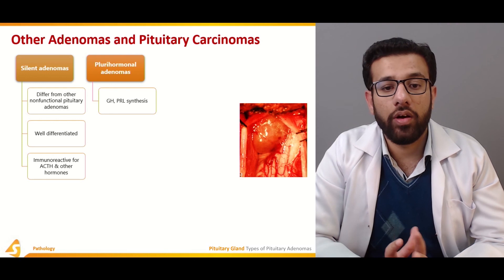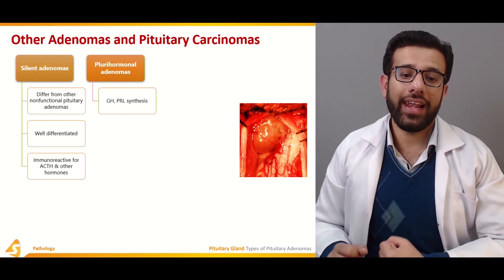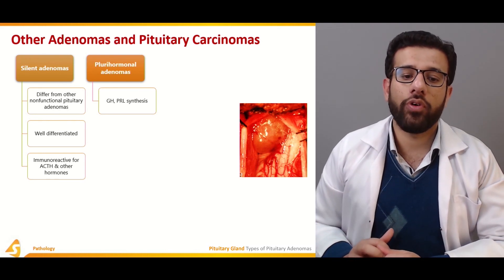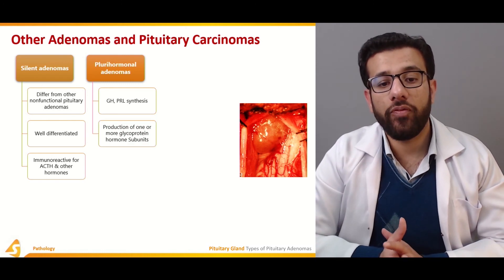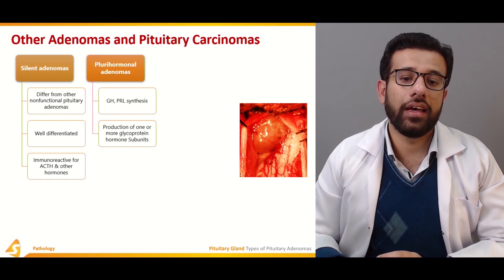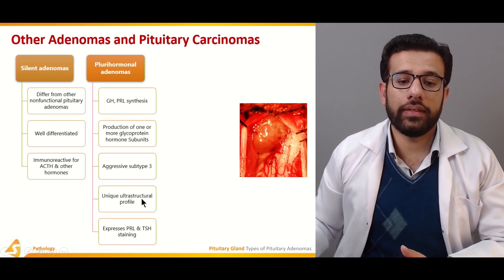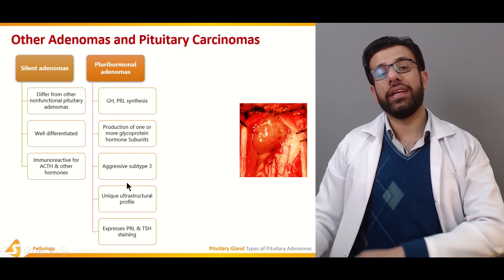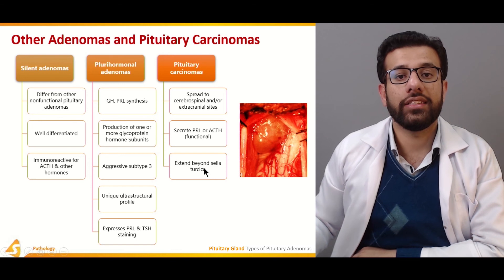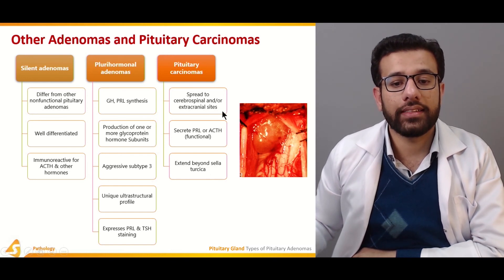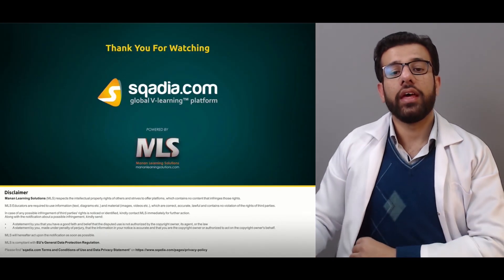Silent adenomas are well-differentiated and immunoreactive for ACTH and other hormones, differing from non-functional adenomas. Plurihormonal adenomas produce growth hormone and prolactin, or one or more glycoprotein hormone subunits; they are aggressive with a unique structural profile. Pituitary carcinoma spreads to cerebrospinal or extracranial sites, produces prolactin or ACTH, and extends beyond the sella turcica.